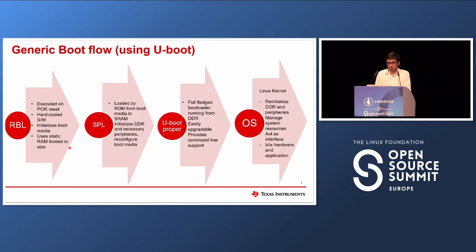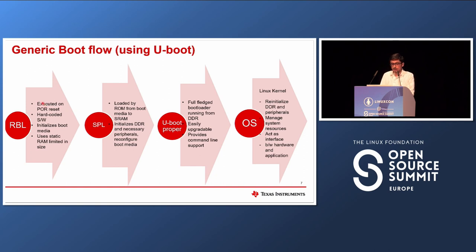We'll look at the boot flow that U-Boot uses and see where the splash screen sits in this flow. As soon as you power on your board, a power-on reset happens and the ROM bootloader — the secondary program loader — starts. It is hard-coded software loaded on your EEPROM and runs when your device is powered on. Its role is to initialize the boot media required to load the next stage of the bootloader. It is very limited in size and uses static RAM for any operations.